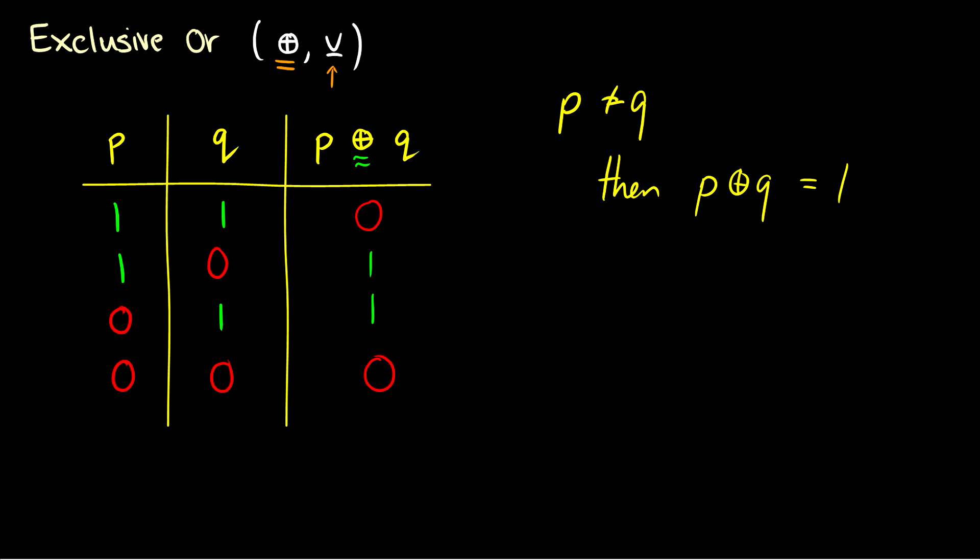So those are truth tables. And in the next video, we'll learn how to use these connectives and truth tables to prove that two statements are logically equivalent.